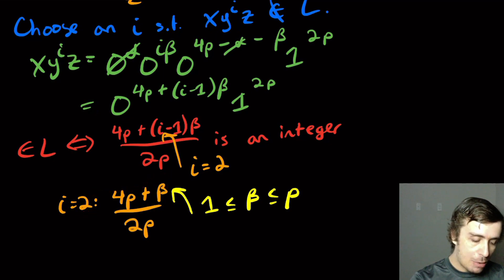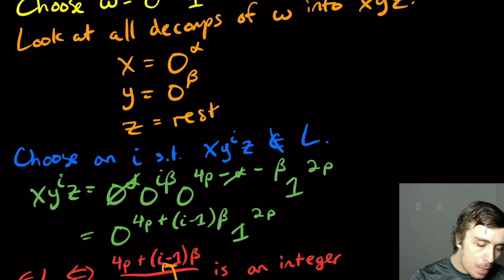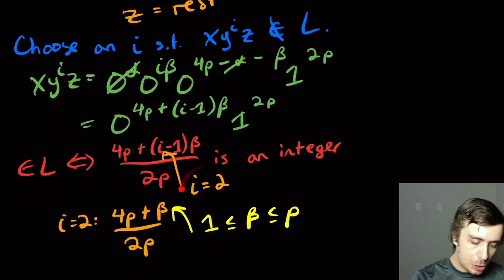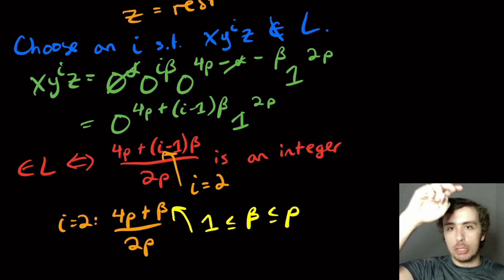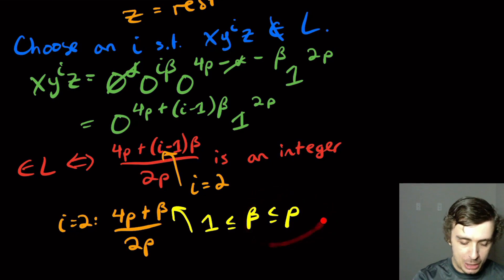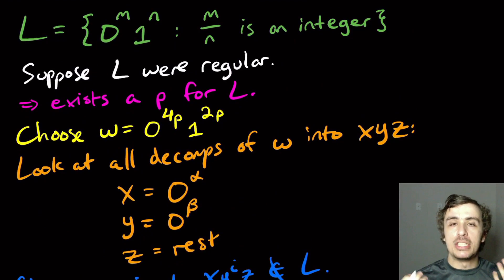So therefore, if we pick i equal to 2, no matter what beta is, this thing is not an integer. And so therefore, we are not in the language as a result of that. If you pump down, so if we chose i equal to 0, that also would work. We would have 4p minus beta, and the only way that that could be an integer is if we had 2p upstairs, which means that beta would also have to be 2p, and that's just impossible according to this. So that is a quick proof to show that this language is not regular.